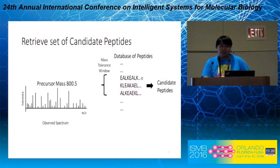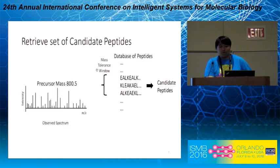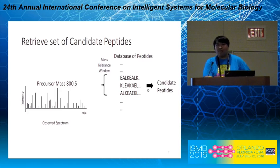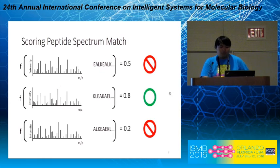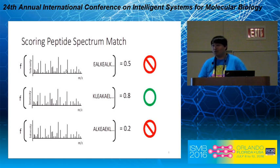Specifically, we will have an unknown observed spectrum with a certain precursor mass, and we will look into the database of peptides and retrieve a set of candidate peptides whose mass lies within a certain mass tolerance window of the precursor mass. For each peptide in the candidate set, we will have a scoring function which takes the candidate peptide and the observed spectrum match and assigns a score, so that the top-scored peptide is reported as the identified peptide.